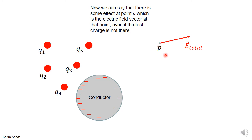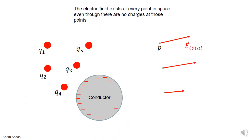We can now remove the test charge from point P, leaving it empty again, but we associate with that point a vector called the electric field vector — representing the total effect of all these charges in space. Of course, the electric field vector exists at every single point in space, not just one. Every point — this one, that one, and all others — has an associated vector, which is the electric field vector at that point.